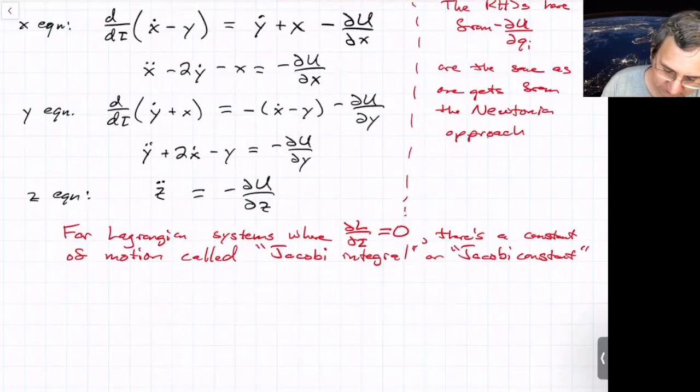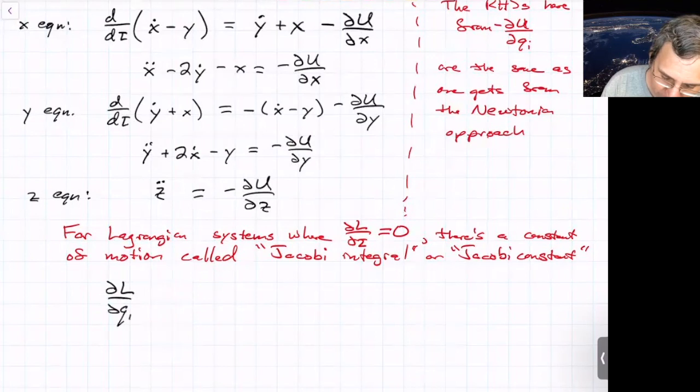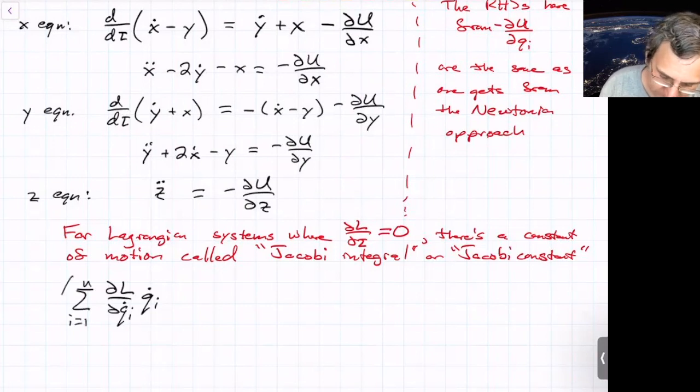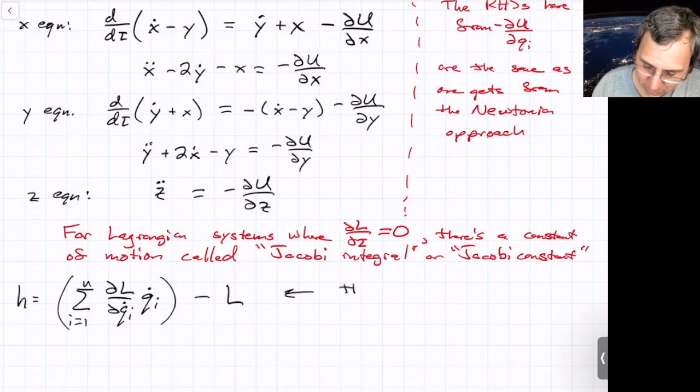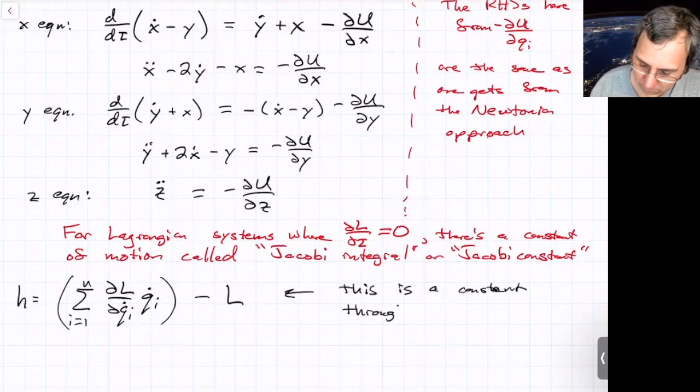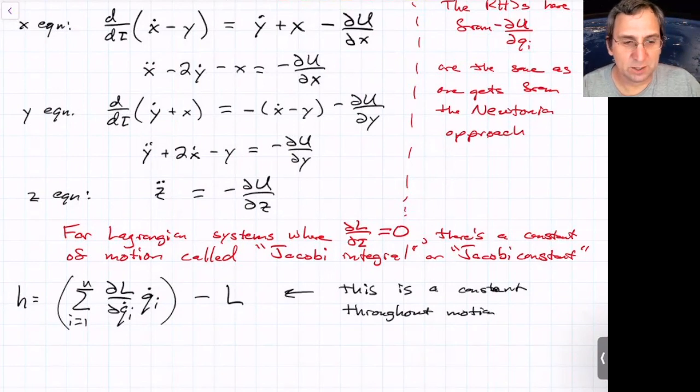What is that constant of motion? It's sometimes written as partial L, partial qi dot times qi dot. You sum over all of them. So you have that, and then you just subtract off L. And that is a constant of motion. The symbol for it, some people call it little h. This is just one scalar, and this is a constant throughout the motion.